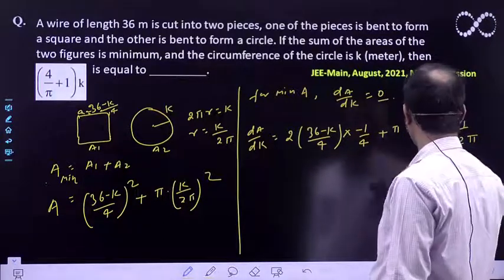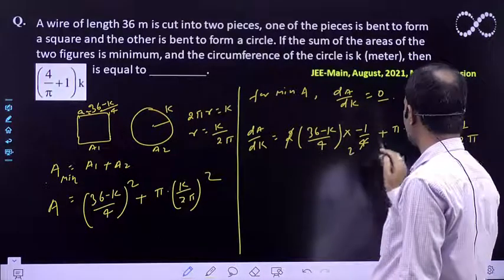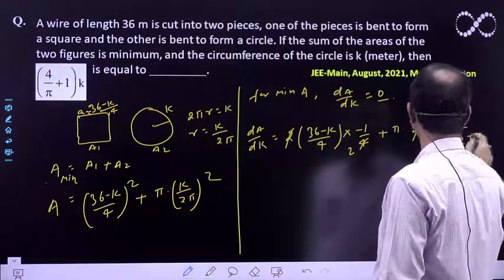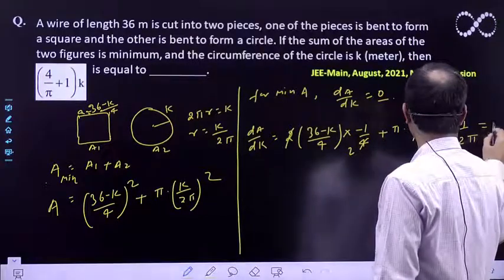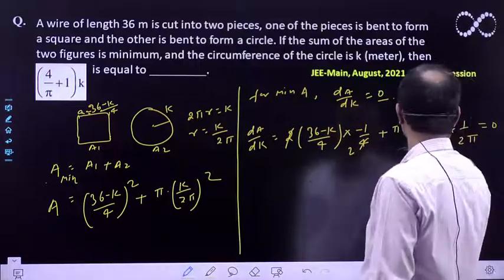For minimum area, the 2 cancels, this also cancels, and it equals zero. Taking this to the right side...